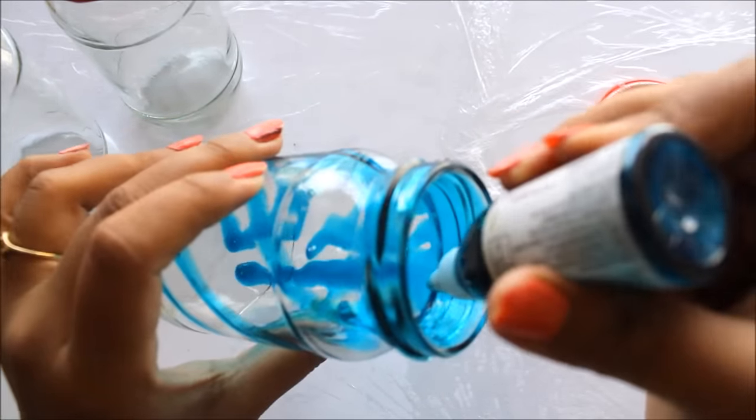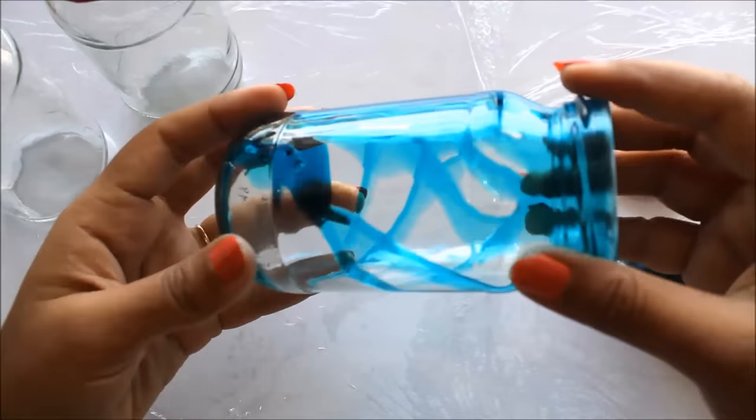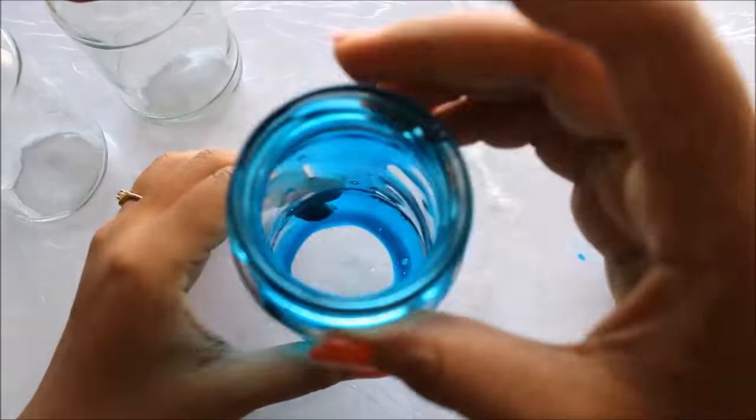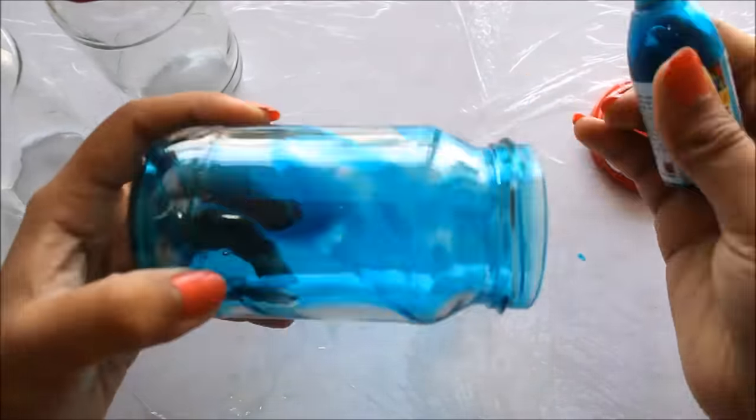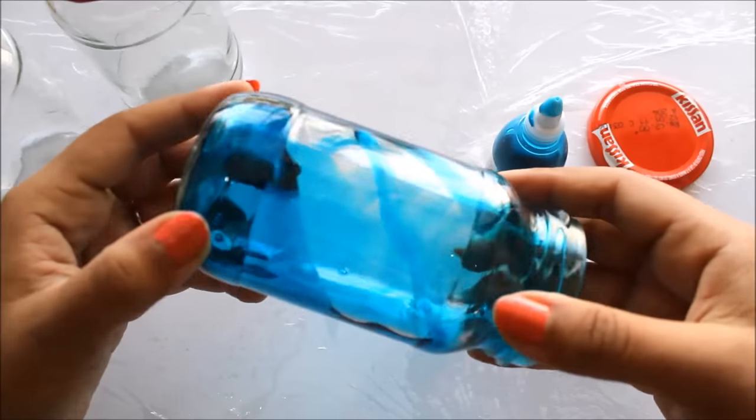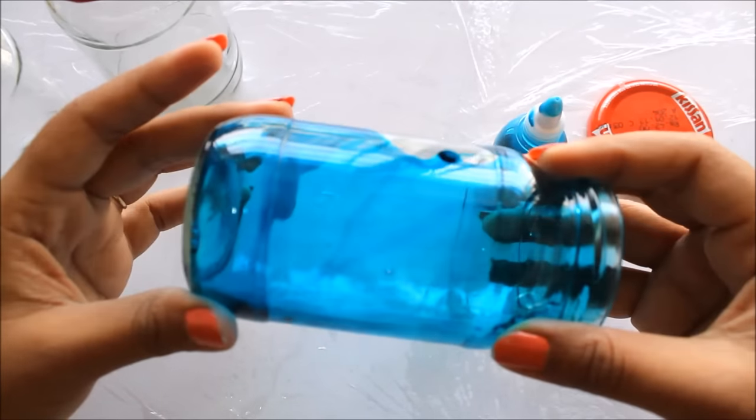Pour a lot of color and after that just turn this color. Simply rotate it and the bottle will get colored itself.